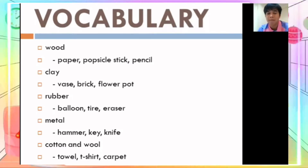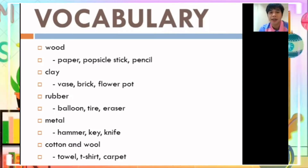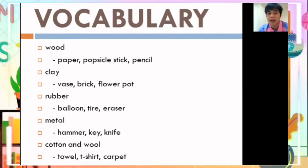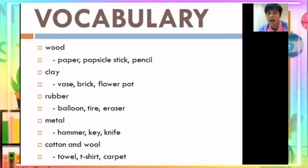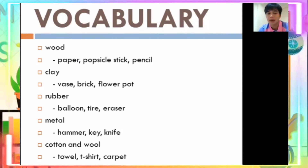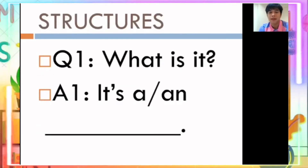Next is rubber — R, U, B, B, E, R — rubber. We have balloon, tire, and eraser. Next is metal — M, E, T, A, L — metal. We have hammer, key, and knife. Next is cotton and wool. We have towel, T-shirt, and carpet.